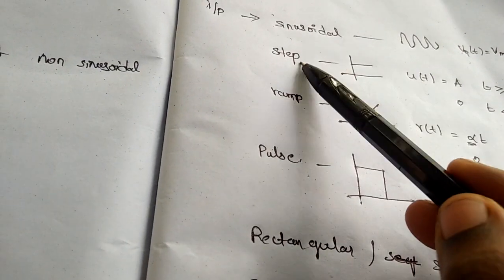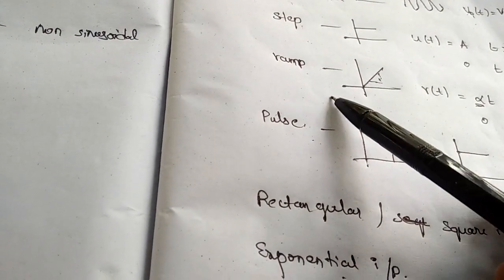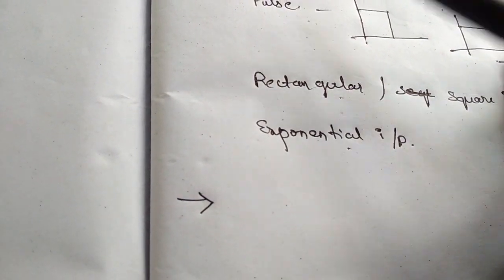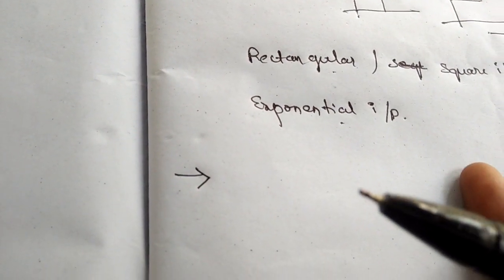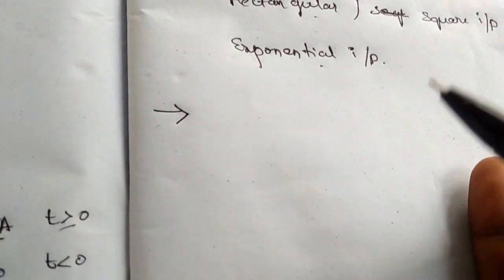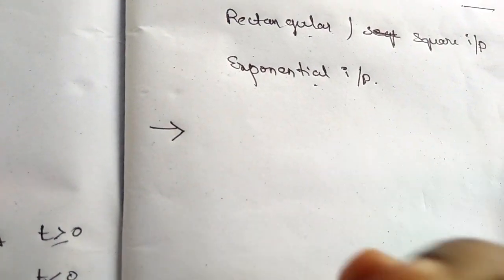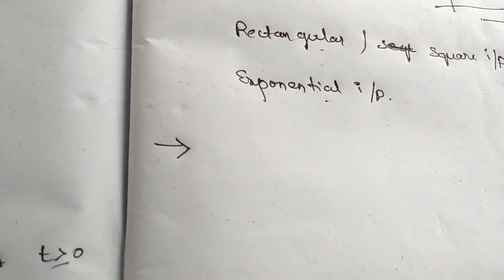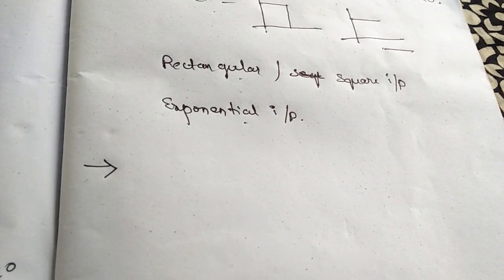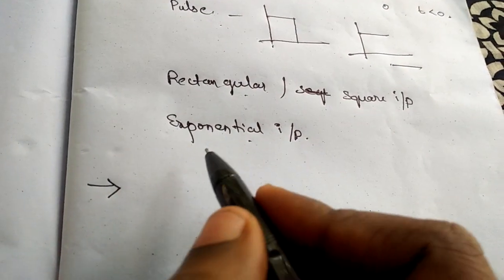For step, ramp, pulse, rectangular, and exponential inputs — those are non-sinusoidal — we can alter the shape of that signal by using linear wave shaping.